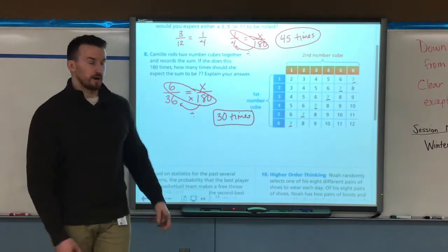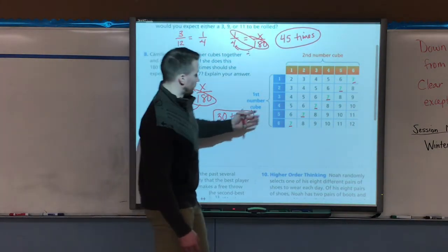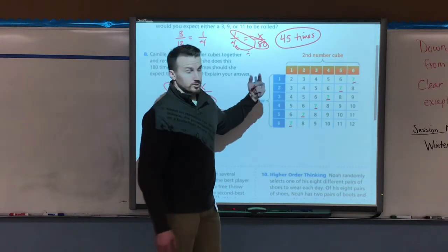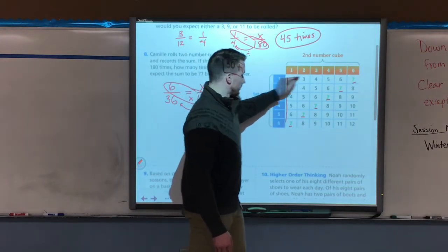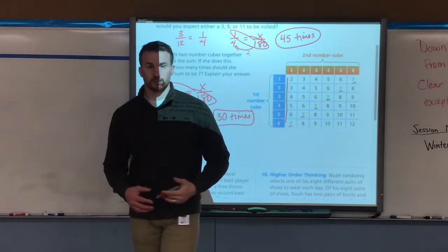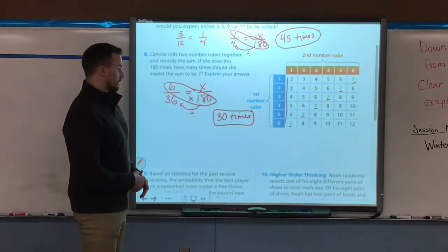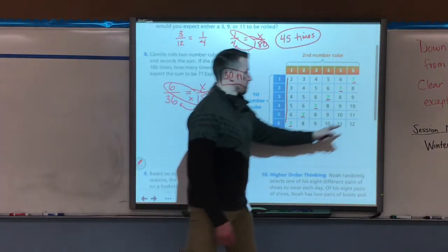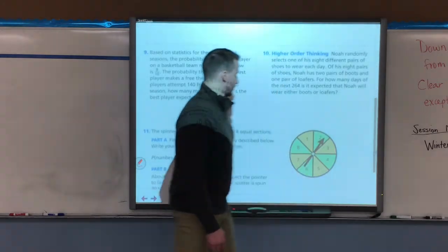Now how do I find the total number of different combinations I can come up with? Because if you look here, there are six here, six there. Six times six is 36. There's a total of 36 different sums I could come up with.